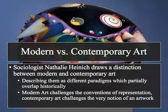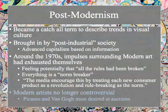Sociologist Nathalie Heinich draws a distinction between modern and contemporary art, describing them as different paradigms which partially overlap historically. Modern art challenges the conventions of representation, while contemporary art challenges the very notion of an artwork. Postmodernism became a catch-all term to describe trends in visual culture, brought in by this idea of post-industrial society — a capitalist society based on information processing, globalization, and the use of technology.